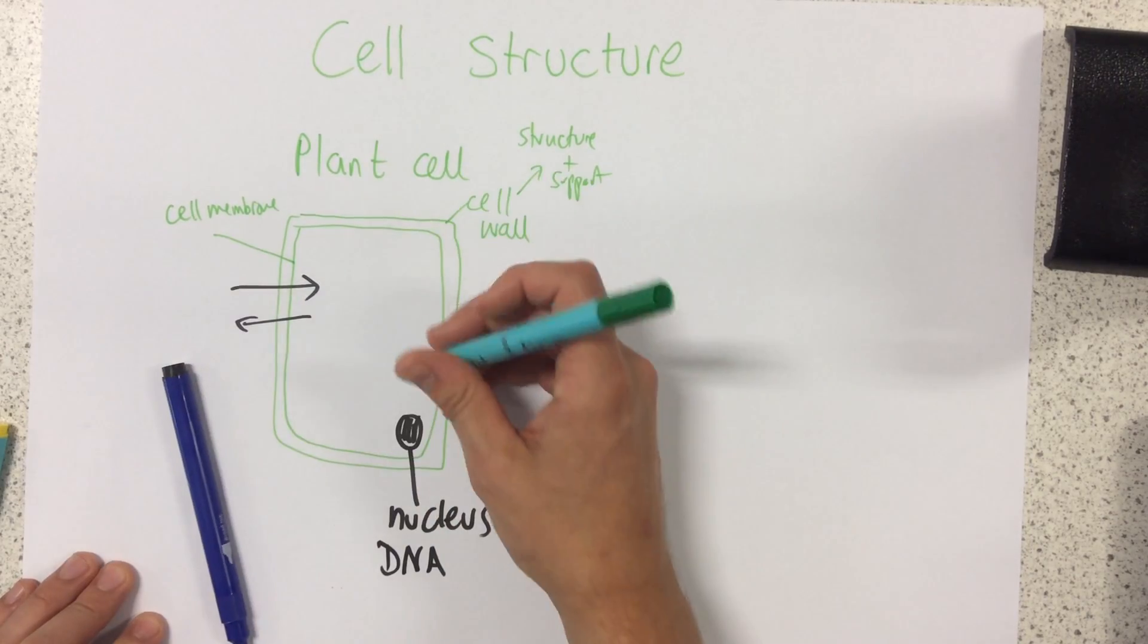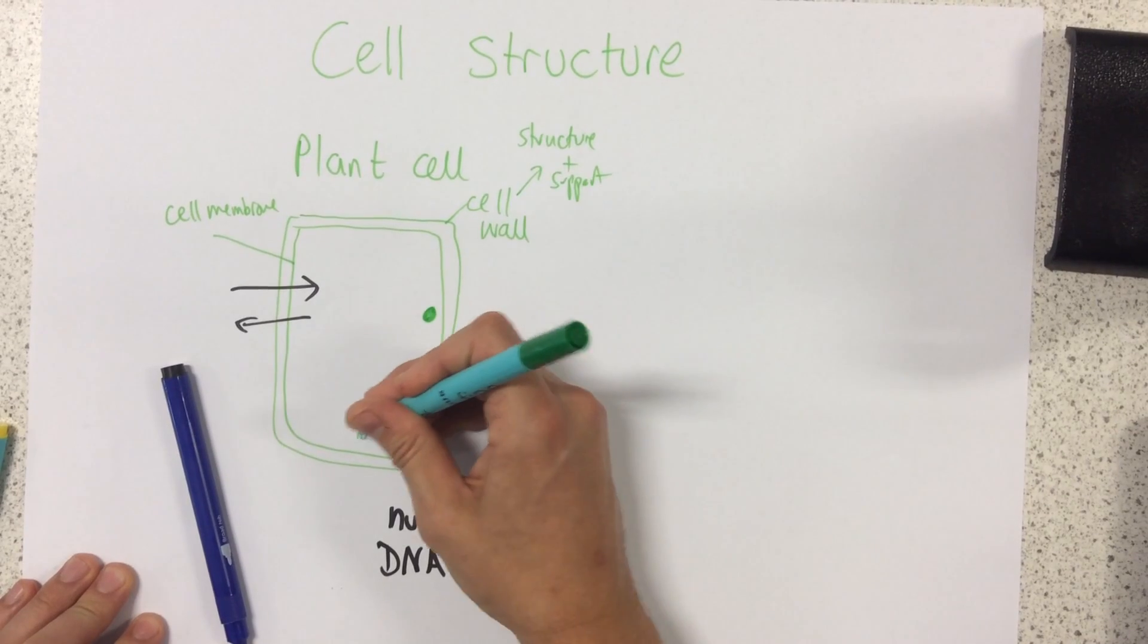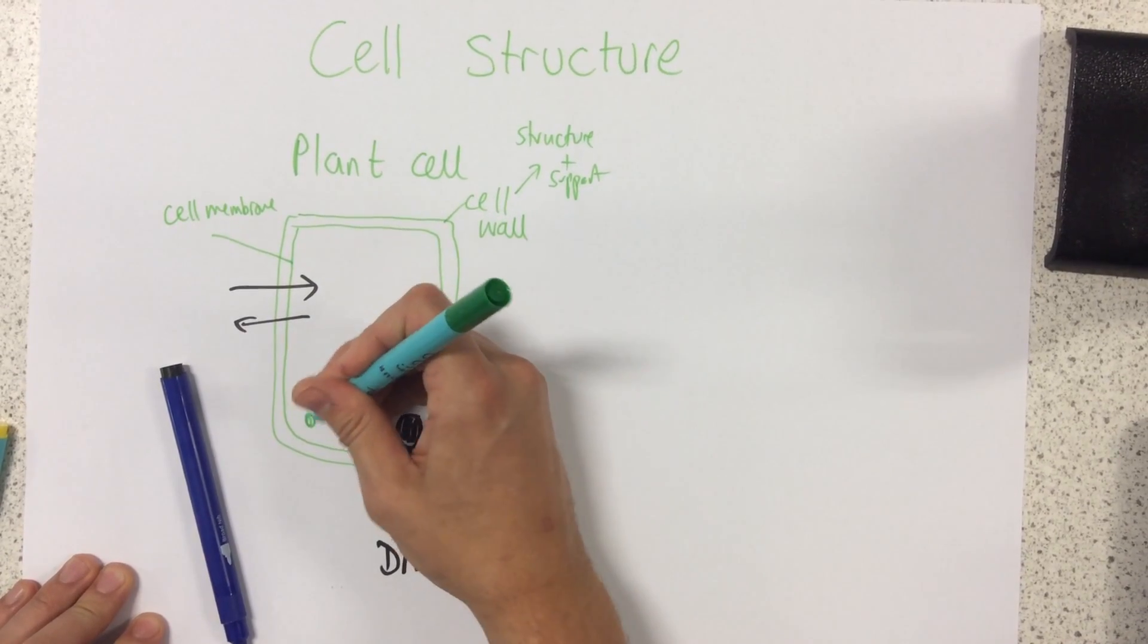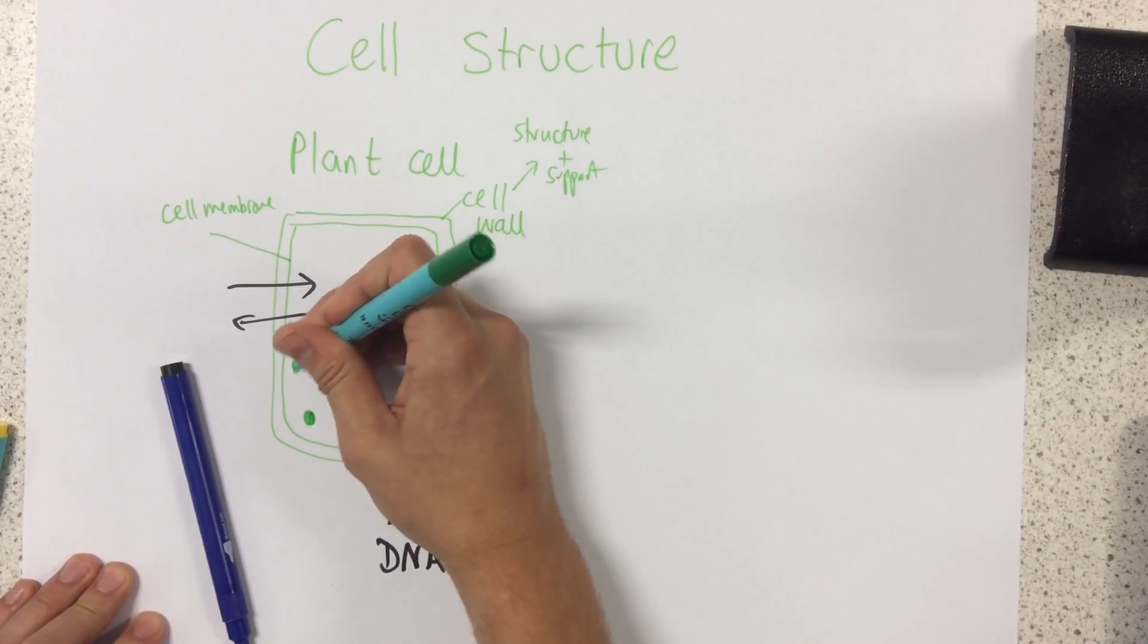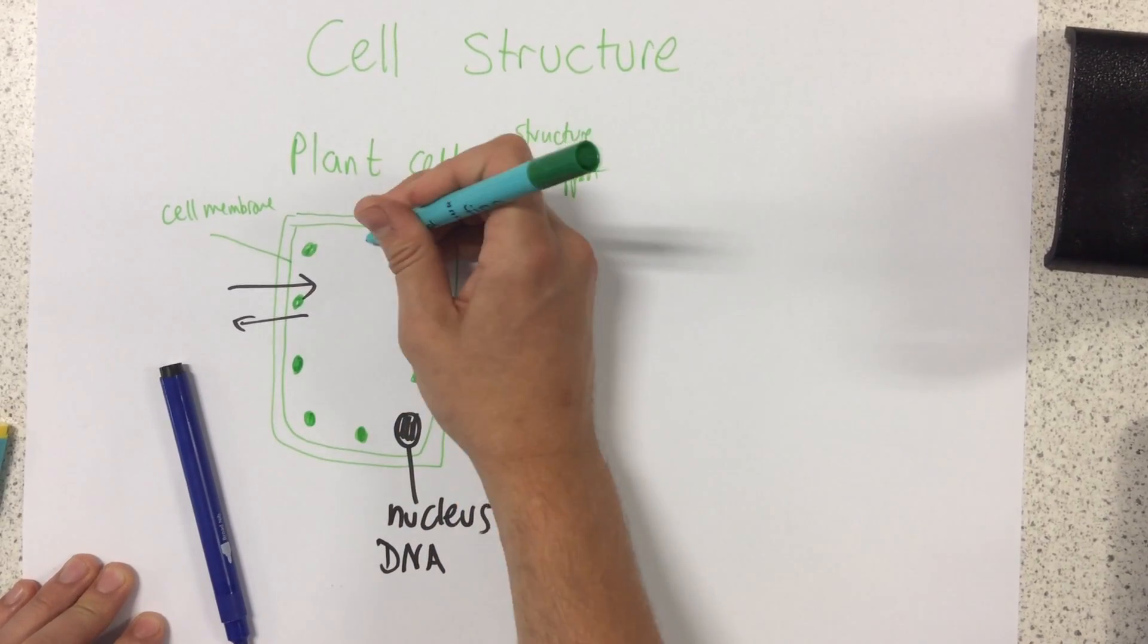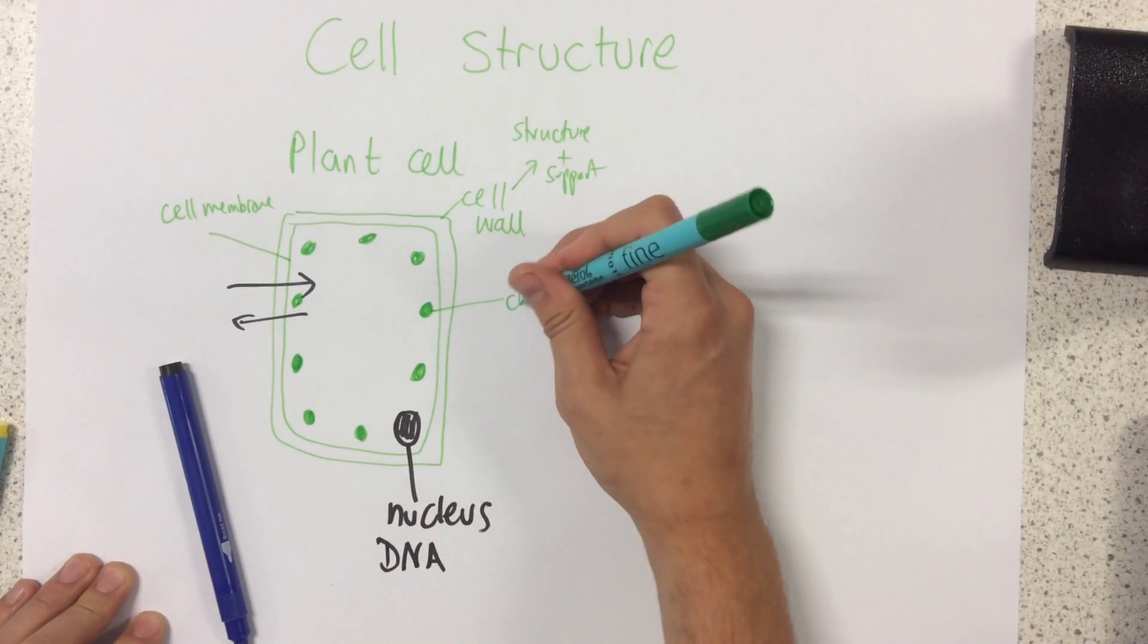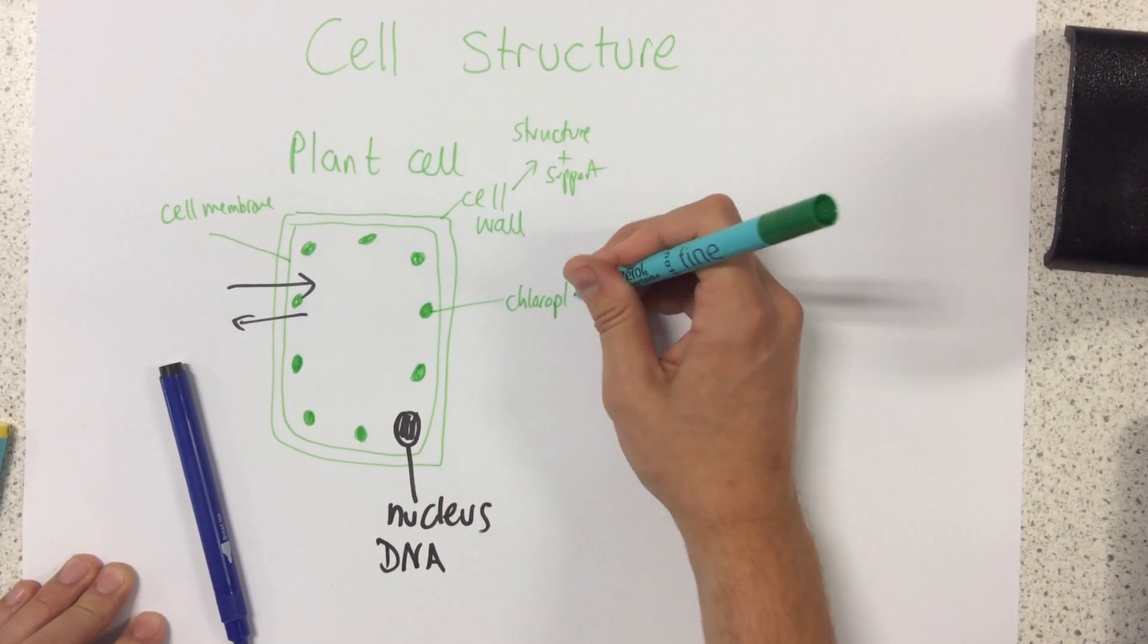Next up we have these things, quite a few of them in a cell particularly if it's in a leaf, which are called chloroplasts. Now these chloroplasts is where we have the site of photosynthesis.